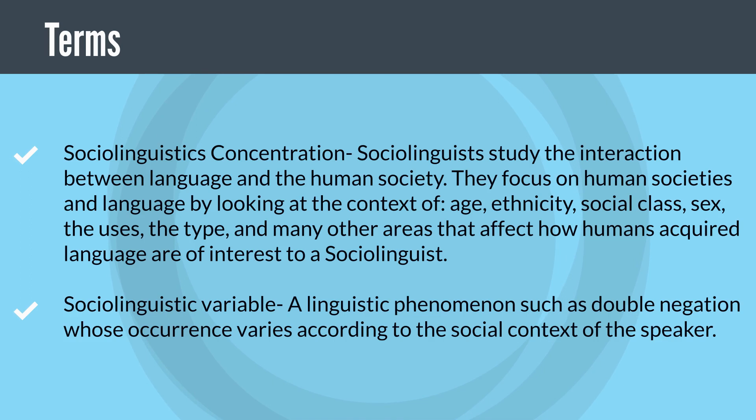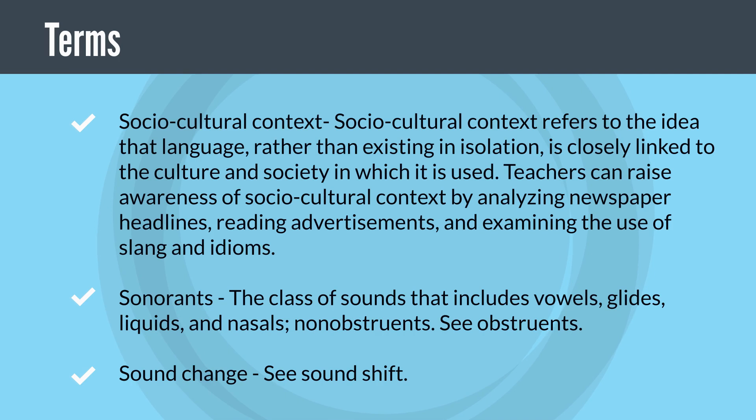Sociolinguistic variable: a linguistic phenomenon such as double negation whose occurrence varies according to the social context of the speaker.